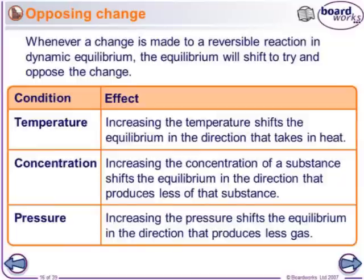Last lesson we touched briefly on the idea of changing conditions — for example, increasing temperature, increasing pressure, something like that — and that will have an effect on the equilibrium. Whenever a change is made to a reversible reaction in a state of dynamic equilibrium, the equilibrium will shift and oppose that change.